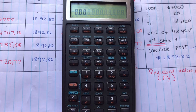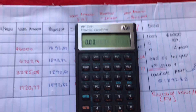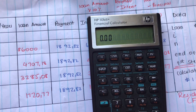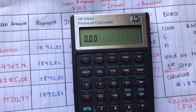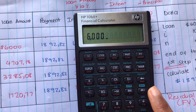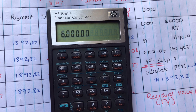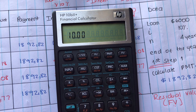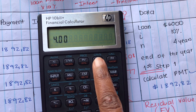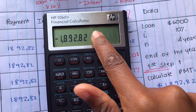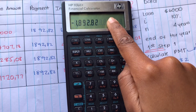On our calculator, we first press orange shift, then clear all. We're going to use the same data as before: 600 is our loan amount, that's our PV. Then we enter our interest rate of 10%, and then N equals 4. We have our data entered, and we need to calculate the PMT because that's what we're looking for — so this is our PMT calculated using the financial calculator.